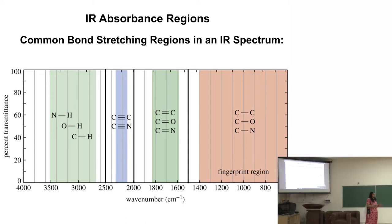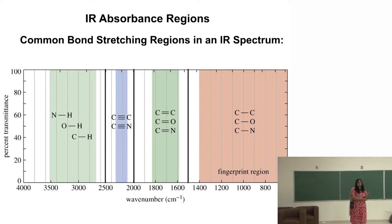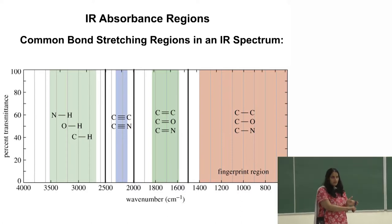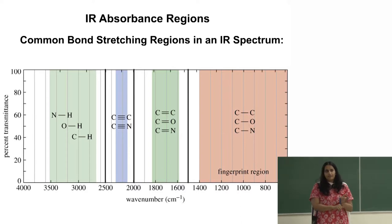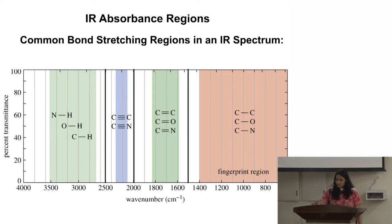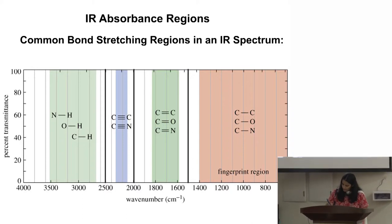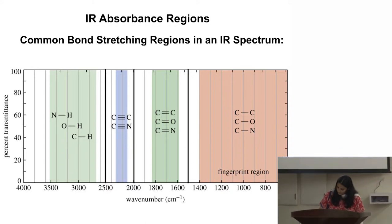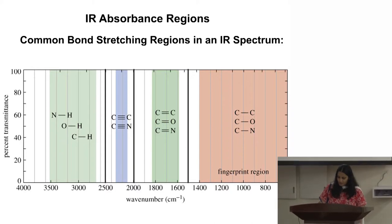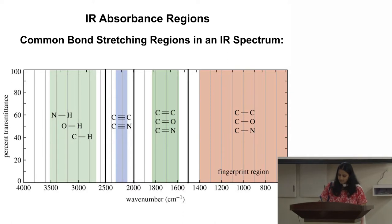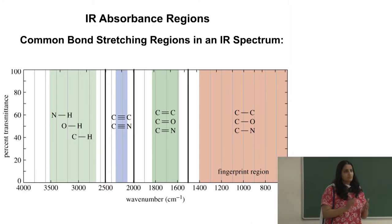Today we went from benzaldehyde and acetone to dibenzylideneacetone (DBA). Let us look at where you expect the peaks of benzaldehyde. There will be C=C double bonds, which will be seen in the 1500–2000 cm⁻¹ region. I should see peaks between 1500 and 2000 for C=C and C=O.